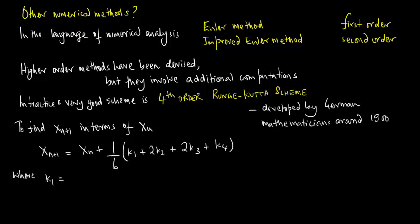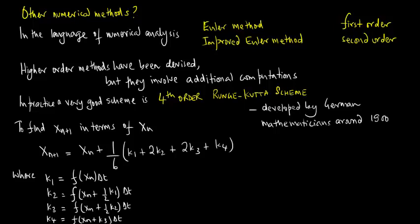Where k1 is f of xn times delta t, k2 is f of xn plus a half k1 times delta t, k3 equals f of xn plus a half k2 times delta t, and k4 equals f of xn plus k3 times delta t.